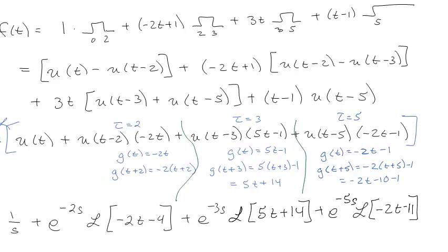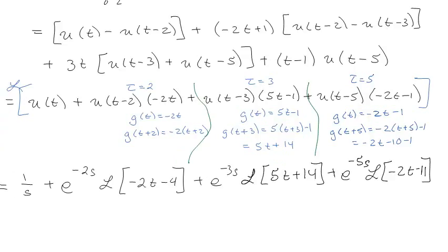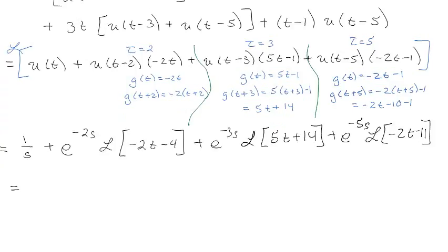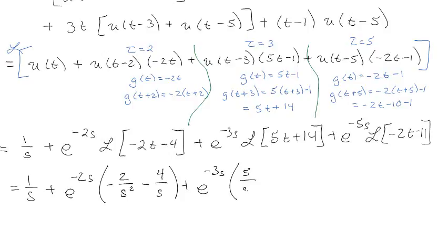Okay, this is just amazing. Okay, so now we go. I can do this. 1 over s, that's already done. It's not pretty, but it's done. Alright, e to the minus 2s. Alright, the 2t is going to be minus 2 over s squared, minus 4 over s. e to the minus 3s, 5 over s squared, this is just so exciting, 14 over s, and e to the minus 5s times the negative 2 over s squared, minus 11 over s. And that's about as exciting as that gets.